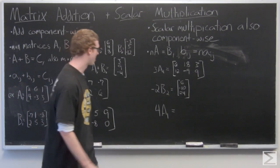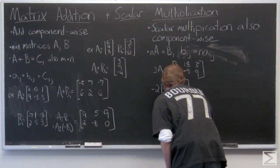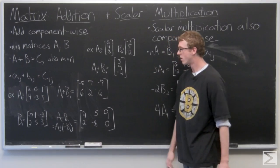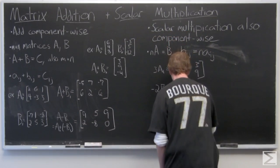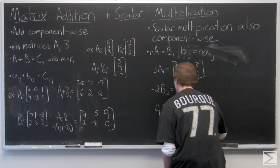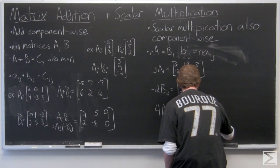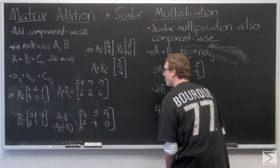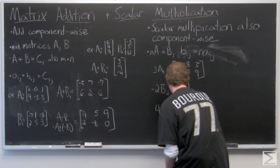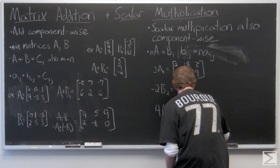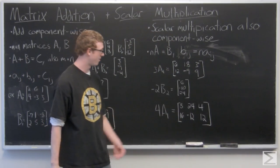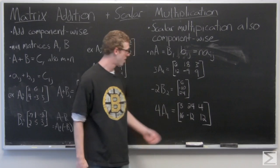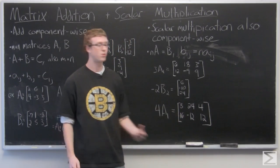And last, we'll look at 4 times A1. So again, just multiply A1 component-wise by 4. And the resultant matrix, again, another 2 by 3 matrix: 8, 24, 4, 16, negative 12, 12.